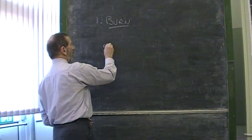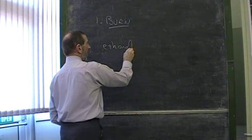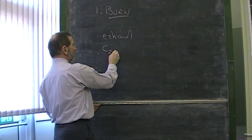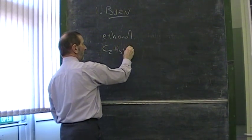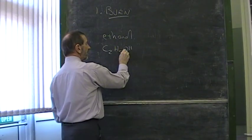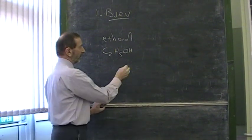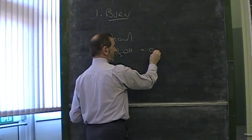If we take ethanol as our alcohol with the formula C2H5OH, can you write an equation for it burning? Of course, when it burns, it joins with oxygen.